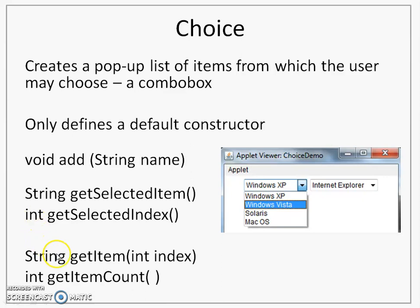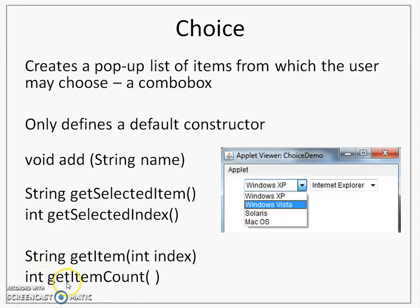If I want to fetch what item is selected using its index number, I use the method getSelectedIndex, which returns the index number of the selected item. If I wish to know which item is at a particular index number, I use the getItem method. For example, calling getItem with index 2 will return 'Solaris' as a string.